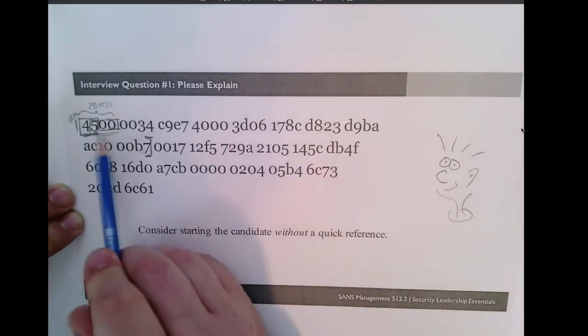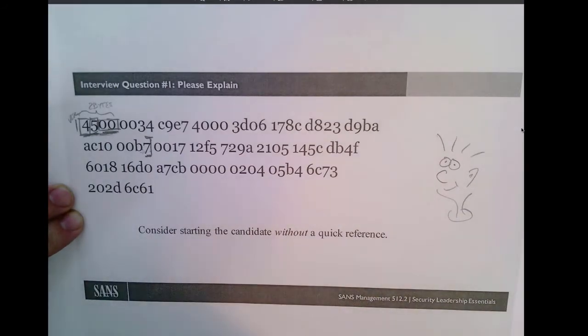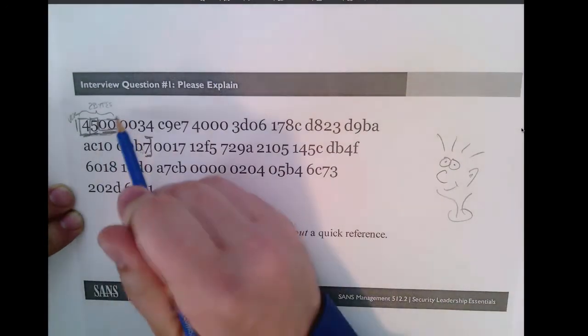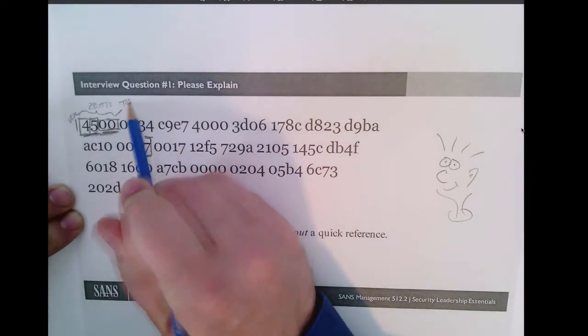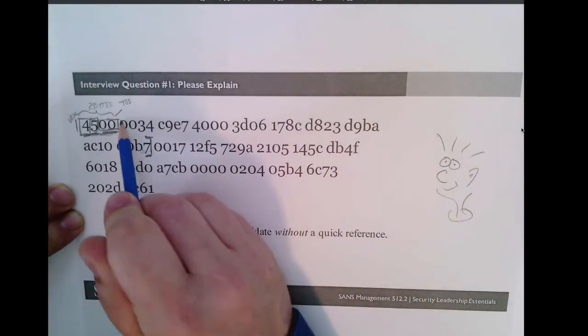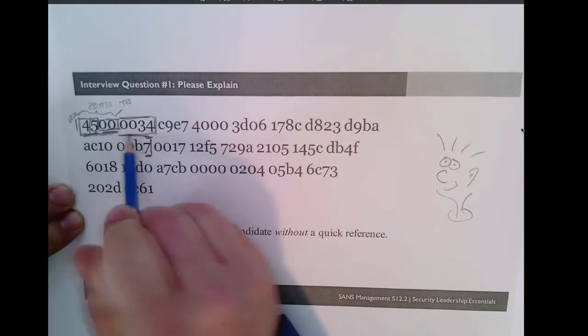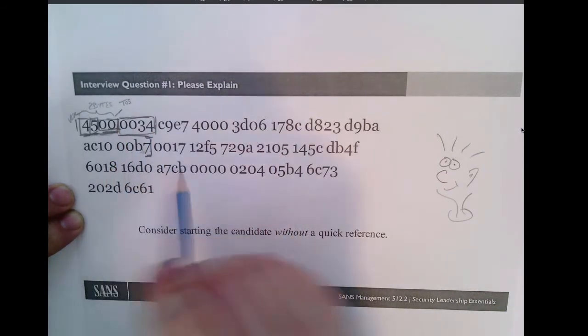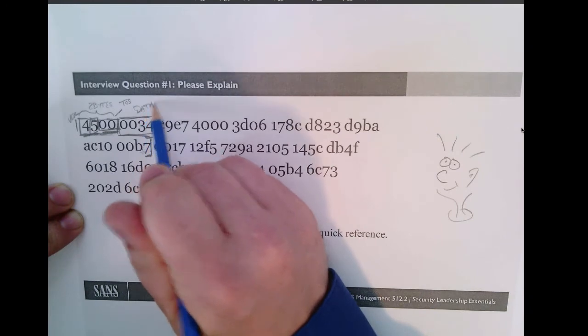Moving on from that, the next byte here, the next two fields that I have, represent the type of service. The type of service or, there's another name for that, the differentiated services byte, because it's actually been retasked to do other things. Now, in this case, the type of service is zero. It's really not very useful. It's very rarely used today. Moving on, what's the next field that we have? The next field is the IP total length, according to the standard, but really represents the datagram length. So, how long is this packet?